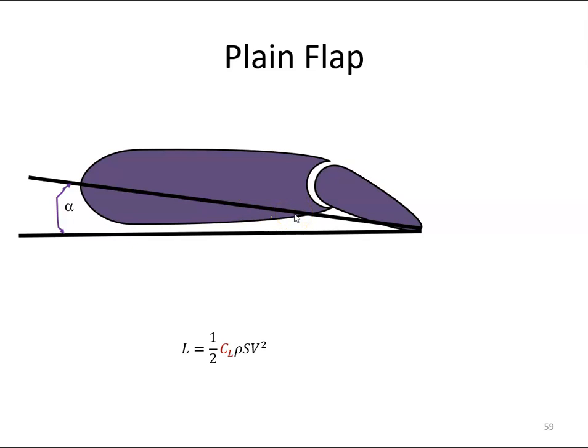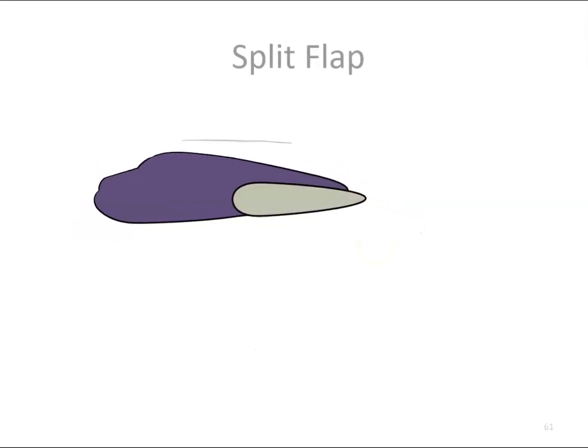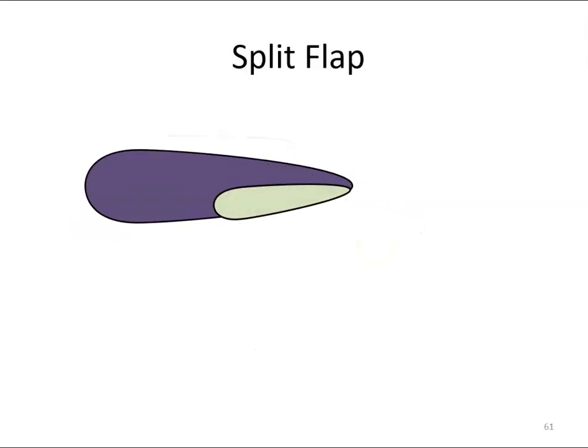The second type of flap is the split flap. A split flap consists of a plate that is deflected from the lower surface of the wing. The split flap produces a slightly greater increase in lift than does the plain flap.